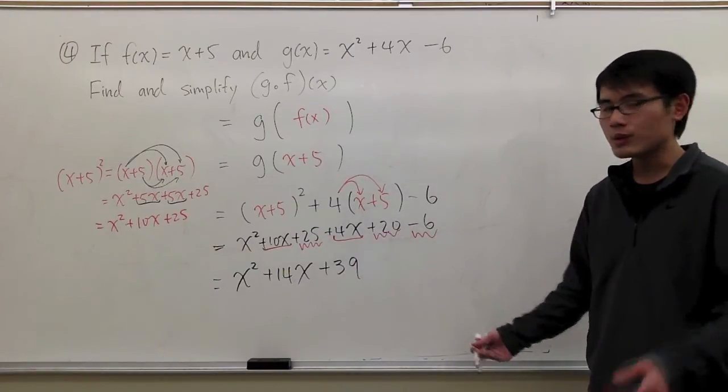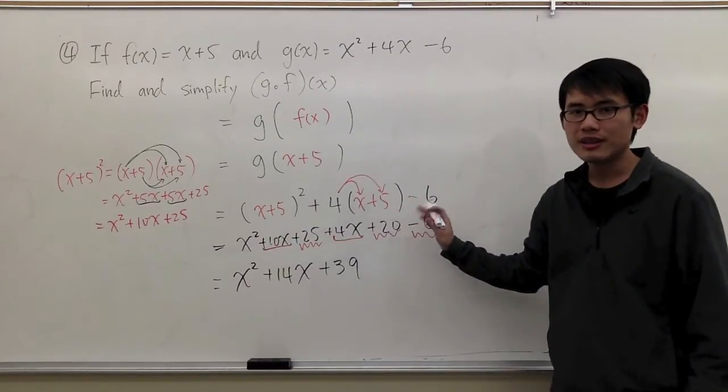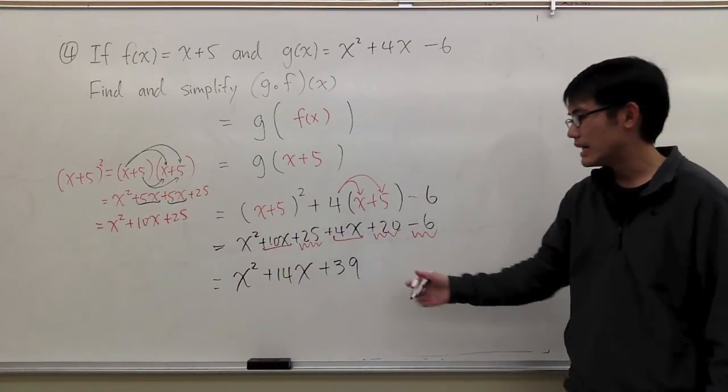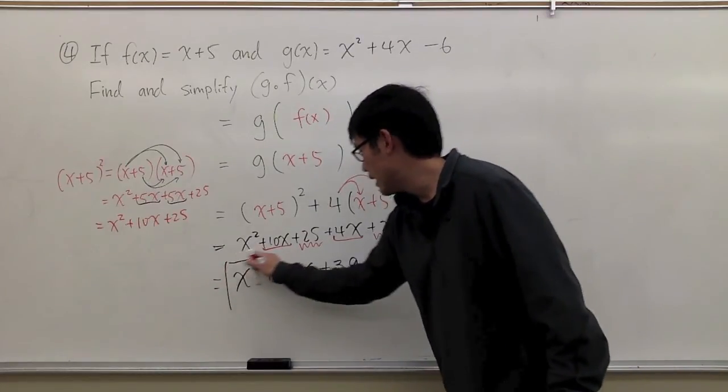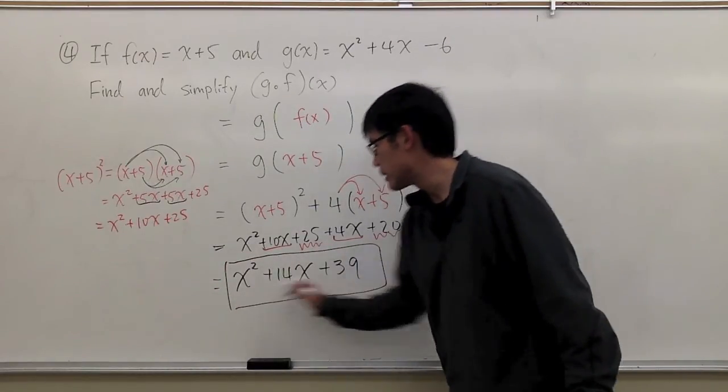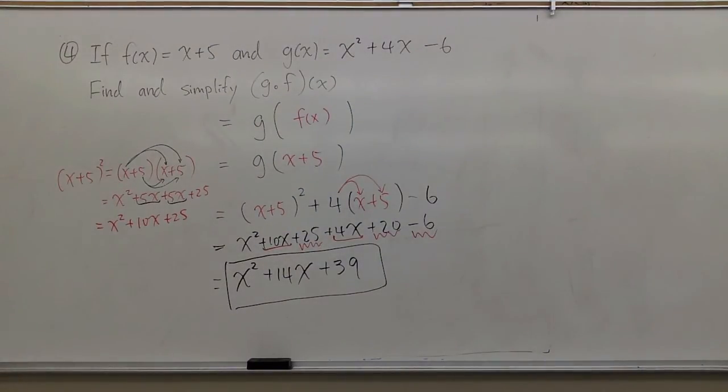So that's the most that we can do. We plug in x plus 5 into the original function g, multiply everything out, and then we combine terms. And my final answer is x squared plus 14x plus 39.